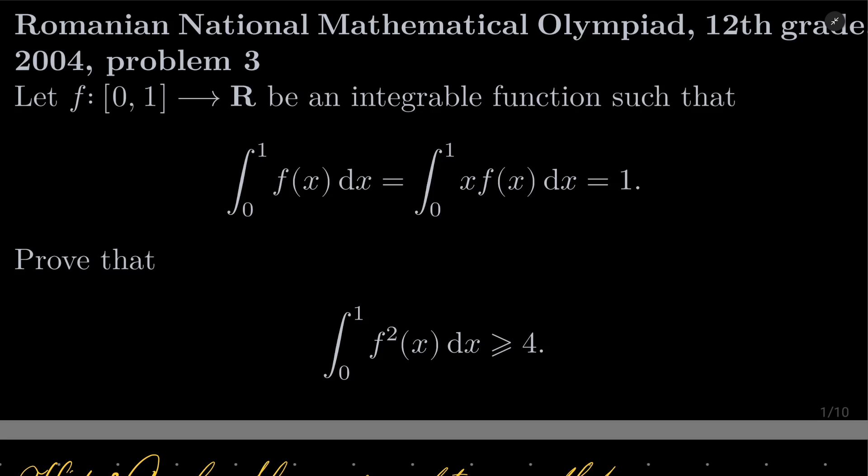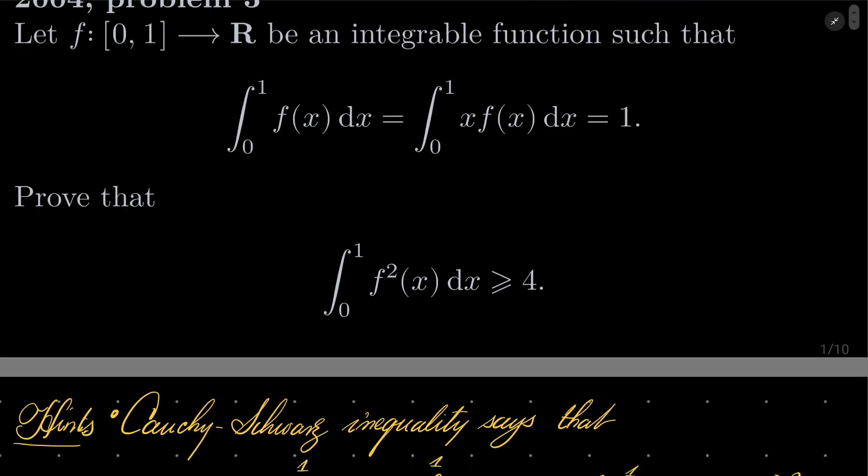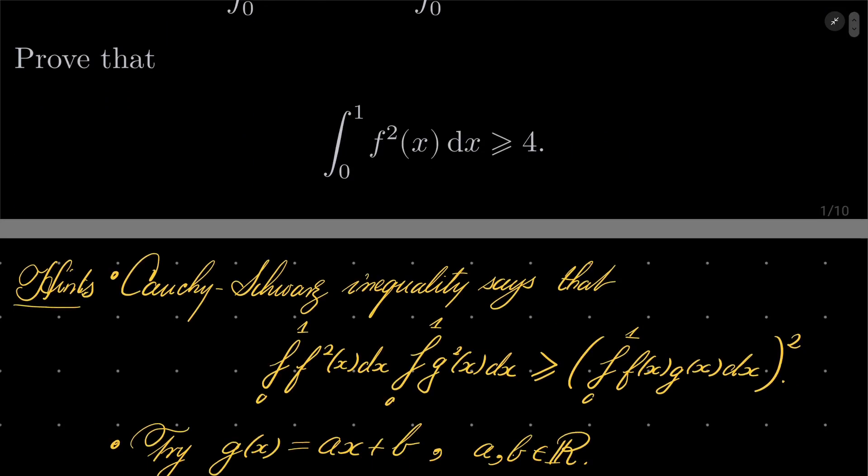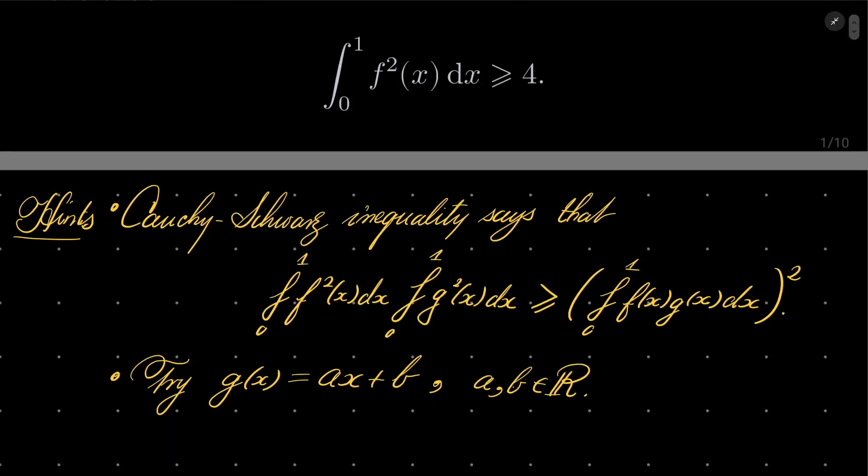It's a pretty nice problem, here are my hints. The key is Cauchy-Schwarz inequality which says that the integral of f squared times the integral of g squared is always greater than or equal to the integral of f times g, quantity squared, provided that f and g are integrable.